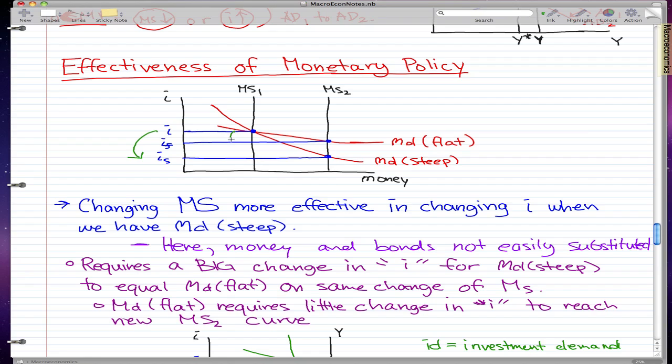MD flat, I doesn't barely move, it moves so little. So yeah, it's more effective when we have MD steep. When we're talking about more effective, I mean that there's a bigger change. So changing MS is more effective in changing I when we have MD steep.